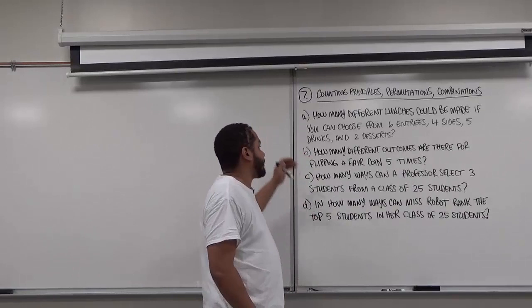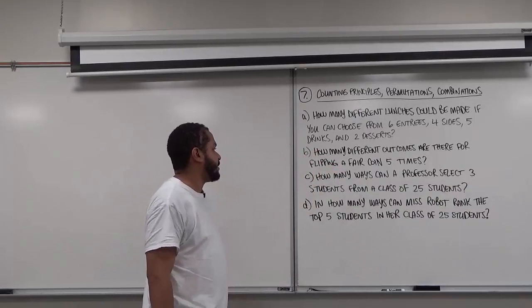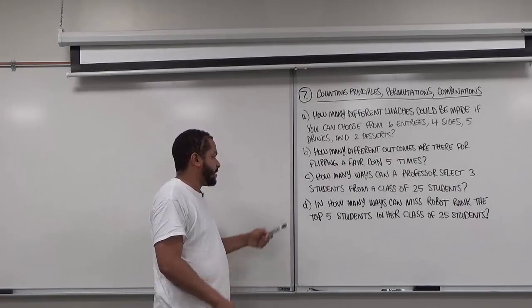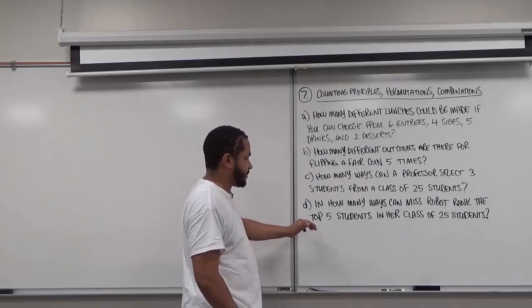Question A is asking, in a rough summary, how many different lunches could be made if you can choose from 6 entrees, 4 sides, 5 drinks, and 2 desserts? Part B is asking how many different outcomes are there for flipping a fair coin 5 times? Part C is asking how many ways can a professor select 3 students from a class of 25 students? And Part D is asking in how many ways can Ms. Robot rank the top 5 students in her class of 25 students?